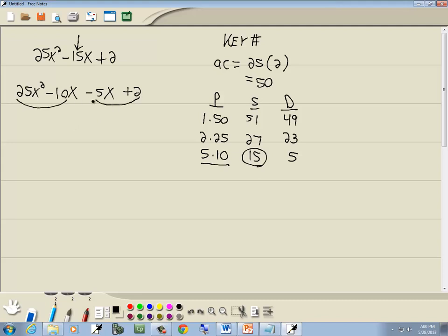Then I'll factor by grouping. Group the first two terms together, group the last two terms together. Now the first two terms have a 5 and an x in common, and that gives us 5x minus 2. The second group has nothing in common, but my first term is negative. So I'll factor out a negative 1, and that leaves us 5x minus 2.